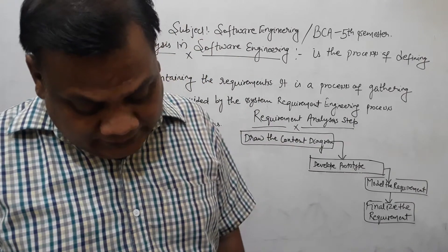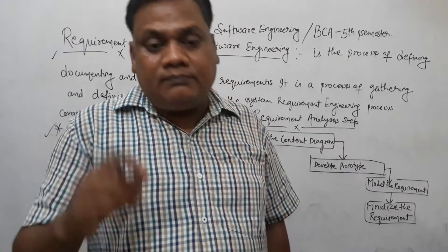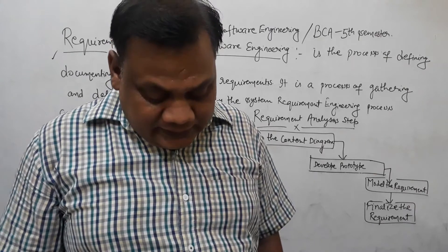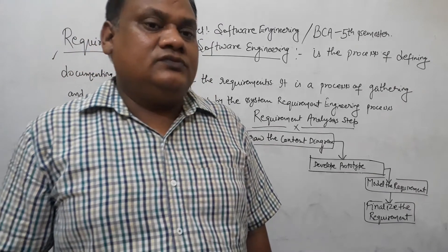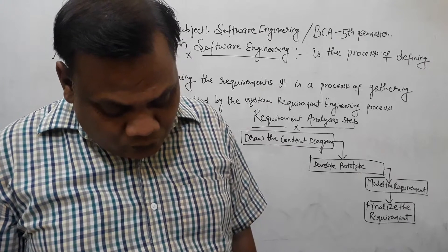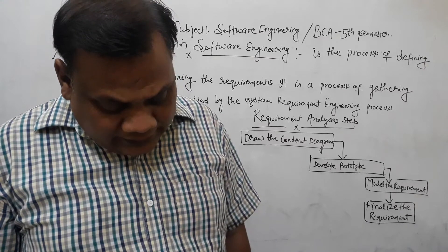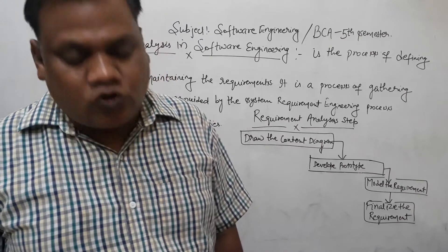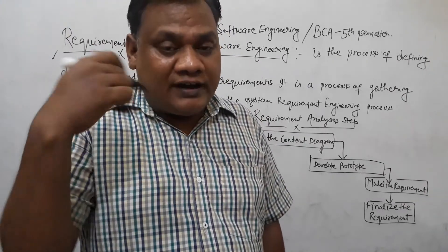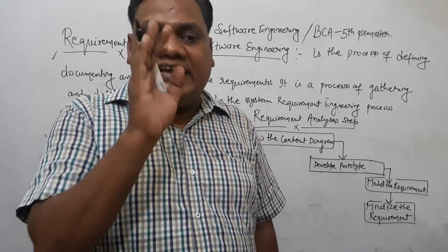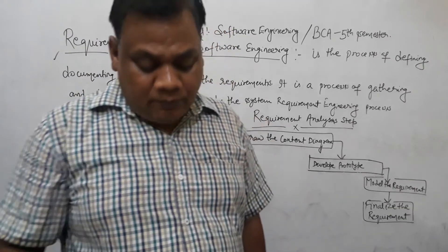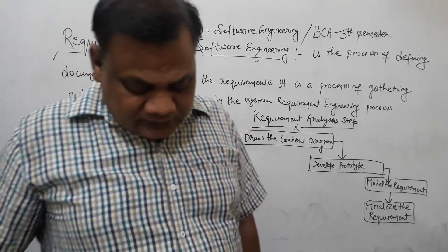Requirement Validation: the objective is to certify that the SRS document is an acceptable document of the system to be implemented. In this step, requirement errors are fixed. Various techniques include: distribute the SRS document, read it, organize the review meeting, follow up actions, and revise the SRS document. The user requirement must exactly match the system need.